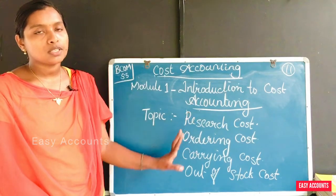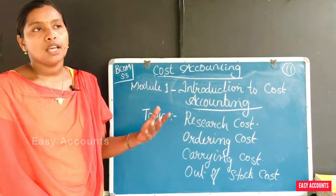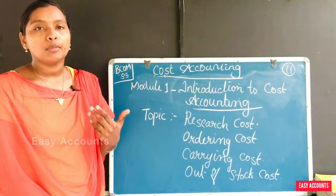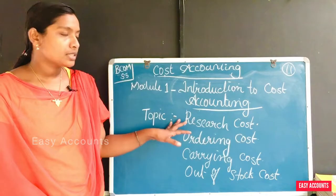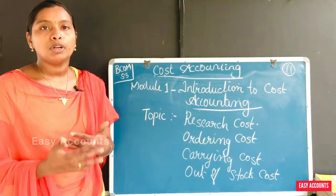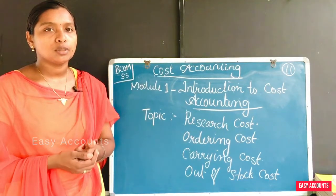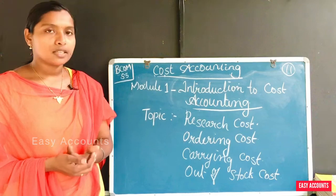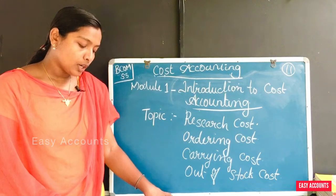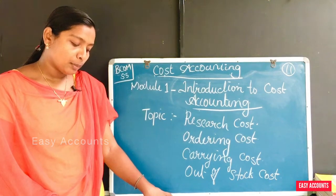First, research cost. Research means that we are going to invent a new thing. Research cost is the cost incurred for seeking or searching for an improved or new product, new or improved method, etc.